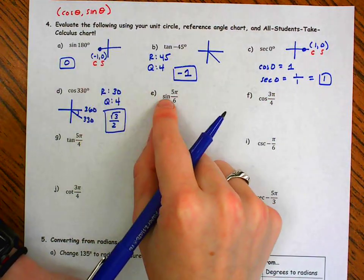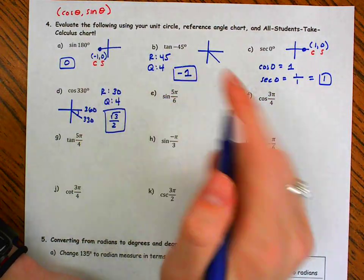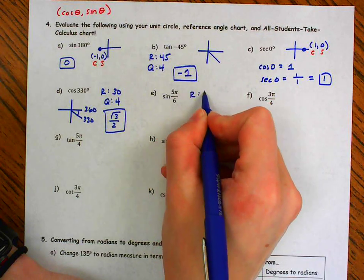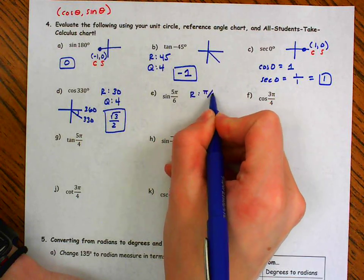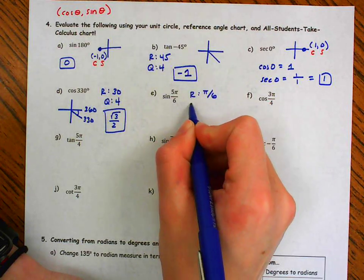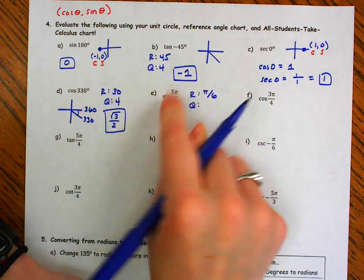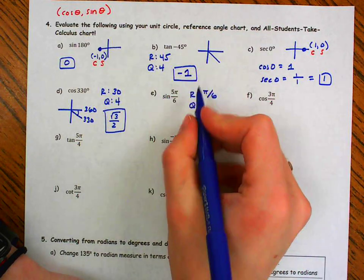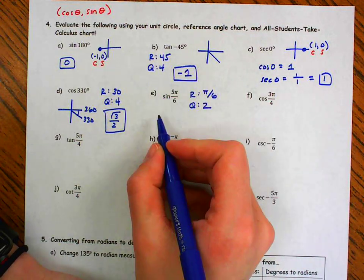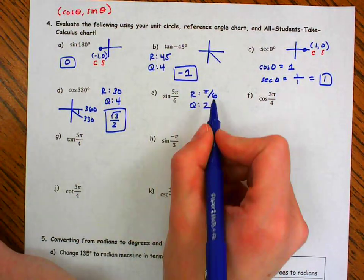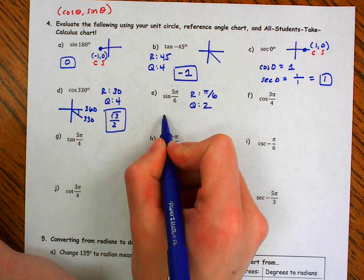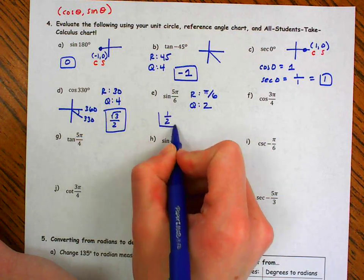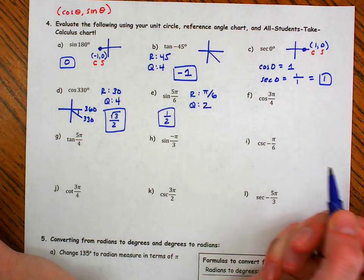Here I have sine of 5 pi over 6. My reference angle is pi over 6. My quadrant — notice the numerator is 1 less than the denominator, so that puts me in quadrant 2. Sine of pi over 6 is 1 half. Sine in the second quadrant is positive.